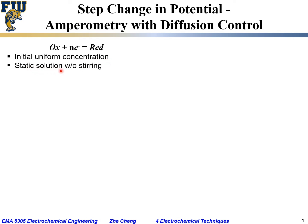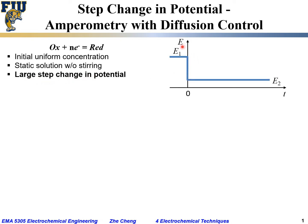We assume a static solution — if using a liquid electrolyte, no stirring, no unforced mass transfer, no convection. Then we consider a step change in potential. Plotting potential versus time, initially the working electrode is at E1, and you step it — in this case, step it down, making it more negative, so that the reduction reaction can happen.